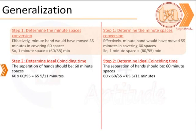The next step is to determine the ideal coinciding time. The two hands coincide after 60 minute spaces, that will be equivalent to 65 5 by 11 minutes.